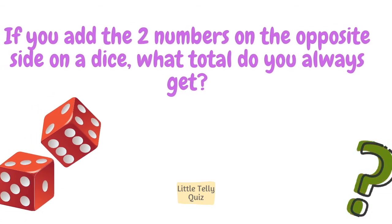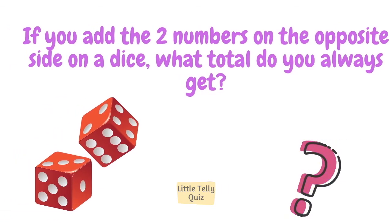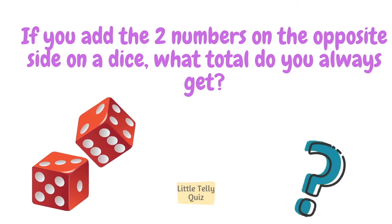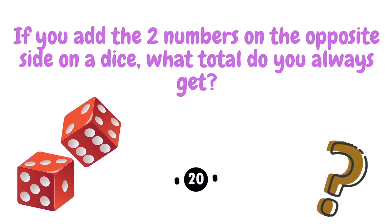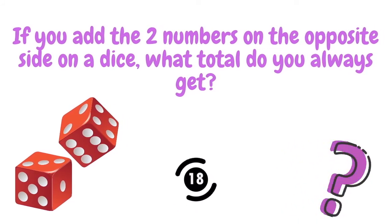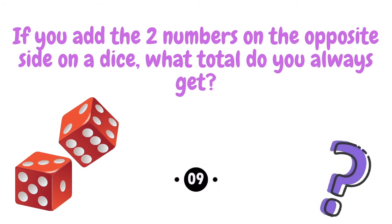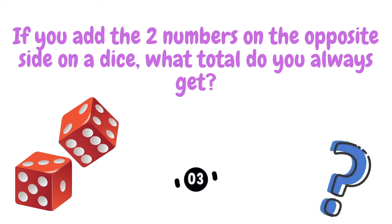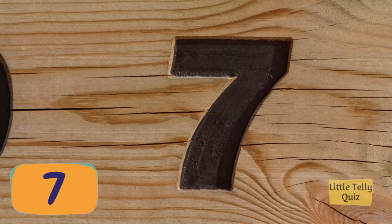If you add the two numbers on the opposite sides of a die, what total do you always get? The answer is seven.